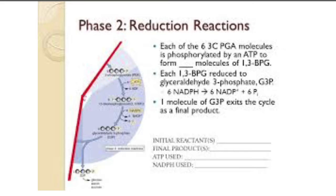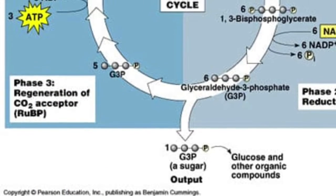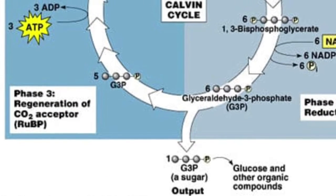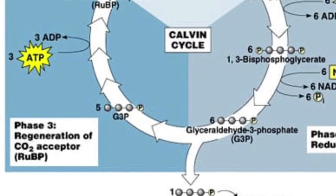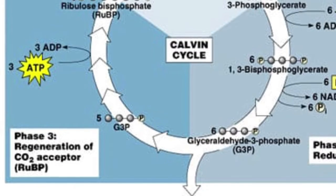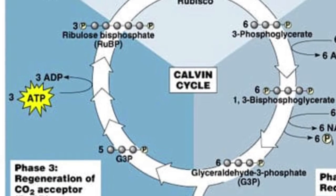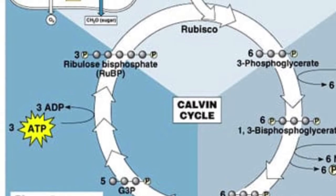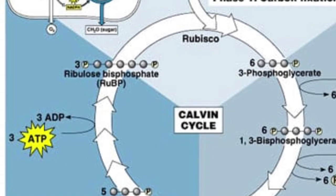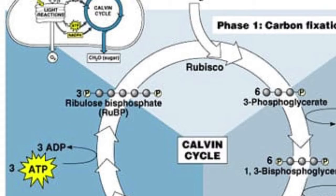Finally, in the Calvin Cycle, there is regeneration. Some G3P molecules go to make glucose, while others must be recycled to regenerate the RuBP acceptor. It requires ATP and a complex network of reactions, which I won't cover now.